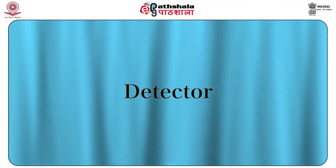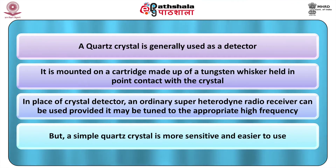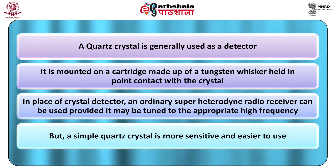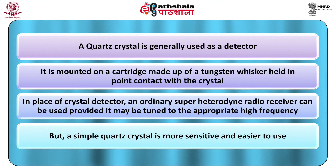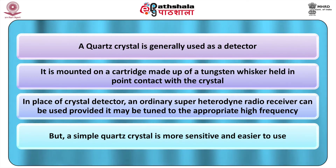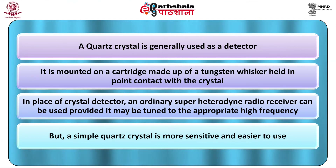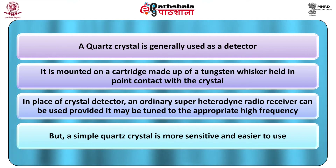The fourth and most important component is the detector. A quartz crystal is generally used as a detector, mounted on a cartridge made up of a tungsten whisker held in point contact with the crystal. In place of a crystal detector, an ordinary superheterodyne radio receiver can be used if tuned to the appropriate high frequency, but a simple quartz crystal is more sensitive and easier to use.